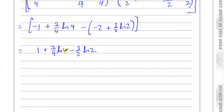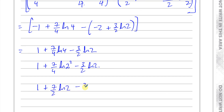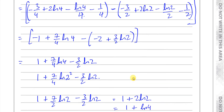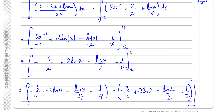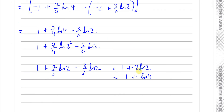To simplify further, convert ln 4 to ln 2: since ln 4 = ln 2 squared = 2 ln 2, we get 7 over 4 times 2 ln 2 = 7 over 2 ln 2. Then 7 over 2 minus 3 over 2 = 4 over 2 = 2. So the answer is 1 plus 2 ln 2, which can also be written as 1 plus ln 4. That's the answer to Part B, the last part of question 5.